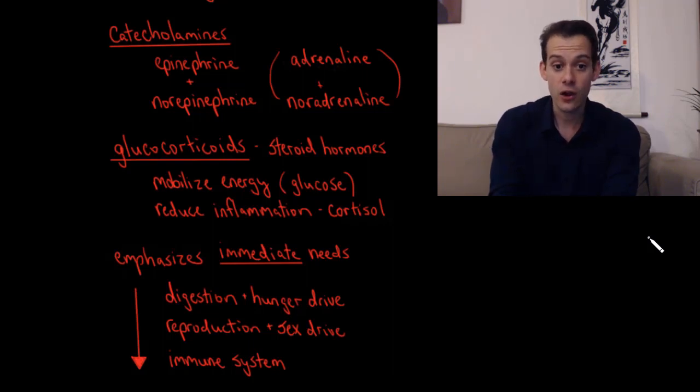And the glucocorticoids are steroid hormones, and what these do is they mobilize energy by increasing glucose in the bloodstream, and they also temporarily reduce inflammation. And you might be familiar with one glucocorticoid, and this is cortisol. And you might be familiar with this as the stress hormone, but you might also be familiar with its pharmaceutical name, hydrocortisone.